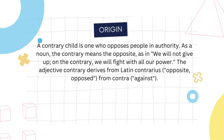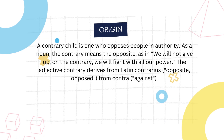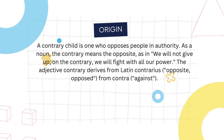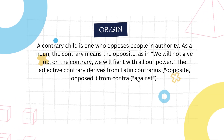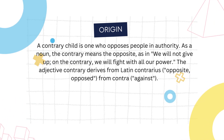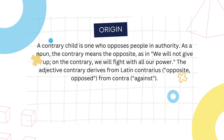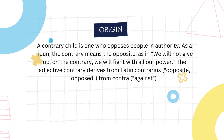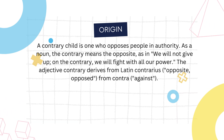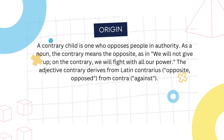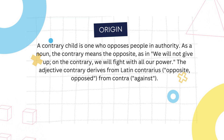Origin: A contrary child is one who opposes people in authority. As a noun, 'the contrary' means the opposite — as in, 'We will not give up. On the contrary, we will fight with all our power.' The adjective contrary derives from Latin 'contrarious', meaning opposite, opposed, from 'contra', meaning against.